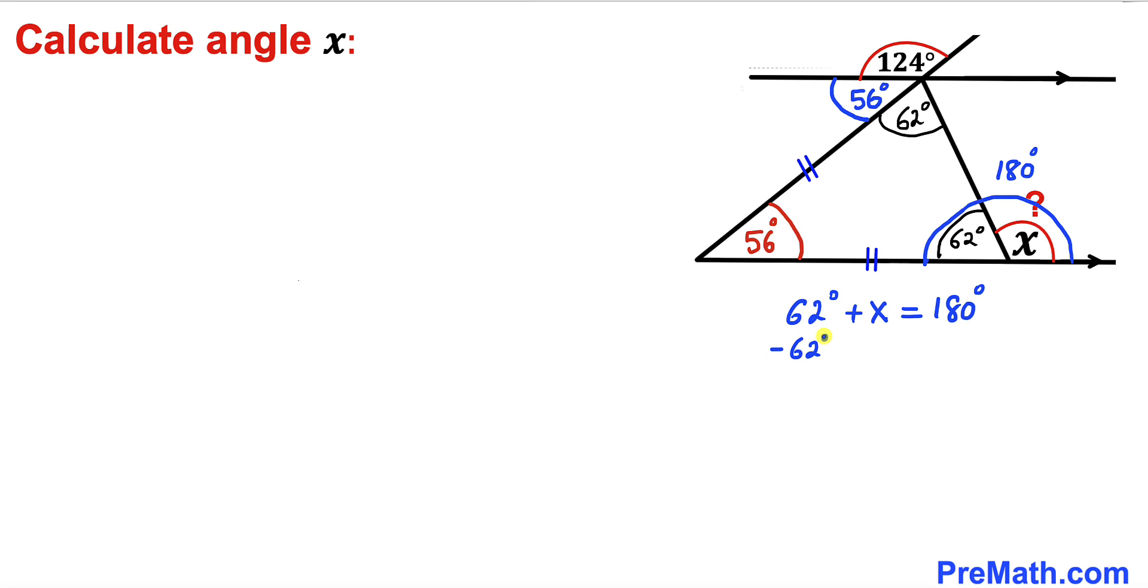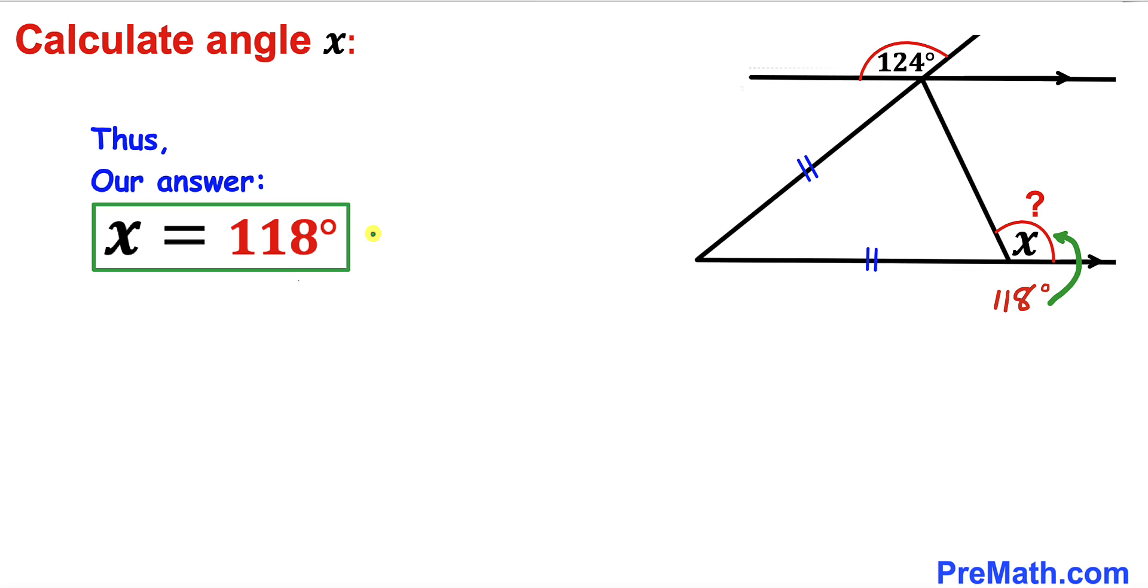Let's subtract 62 degrees from both sides. This is gone. So our angle x turns out to be 118 degrees. Thus, our angle x turns out to be 118 degrees.